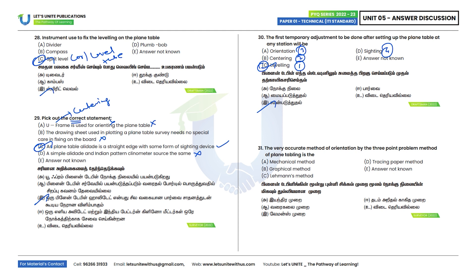Thirty-first question: What is the very accurate method of orientation by three-point problem? The most accurate method is Lehmann's method. Option C is the correct answer. Other methods include trial and error method, tracing paper method (mechanical method), and graphical method (Bessel's method).